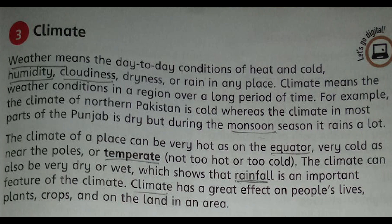Weather means the day-to-day conditions of heat and cold, humidity, cloudiness, dryness, or rain in any place. Climate means the weather conditions in a region over a long period of time. For example, the climate of northern Pakistan is cold. The climate in most parts of Punjab is dry, but during the monsoon season it rains a lot.